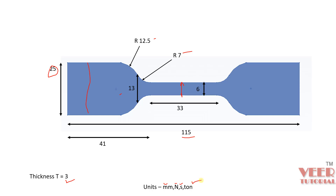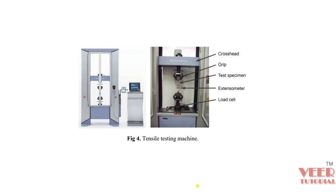Before going into the software, let's understand how this kind of testing is done in real life. Here you can see a tensile testing machine. The specimen is placed in the machine, which has multiple parts: the crosshead, grips, test specimen, extensometer, and load cell.